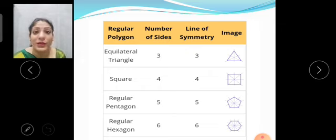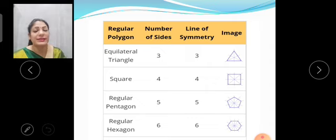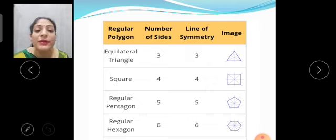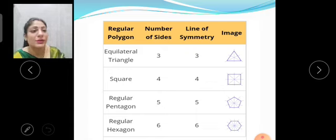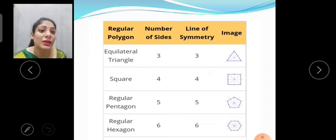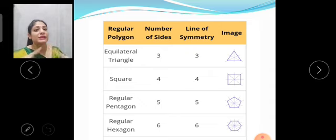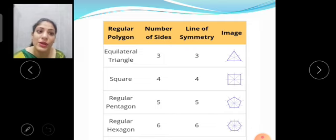Regular pentagon, what is pentagon? The polygon which has five sides and regular pentagon means all the five sides are equal. So the number of sides are five and line of symmetry is also five as you can see in the figure. Regular hexagon, hexagon means having six sides. So number of sides are six and line of symmetry is also six.